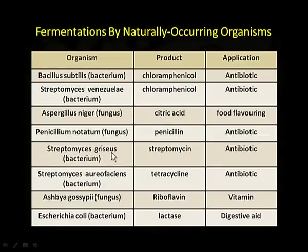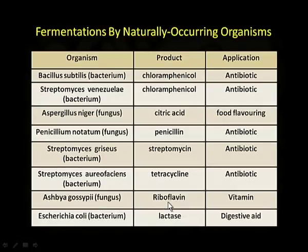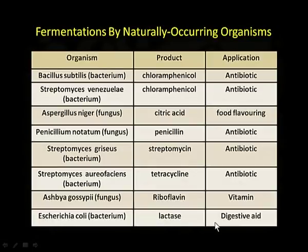Streptomyces griseus is used for producing streptomycin, which is a very important antibiotic. Ashbya gossypii, a fungus, produces riboflavin which is vitamin B2. The bacterium Escherichia coli produces lactase, used as a digestive aid. So microbes are very important — we are using them as antibiotics, in food flavoring, for vitamin production, and as digestive aids.